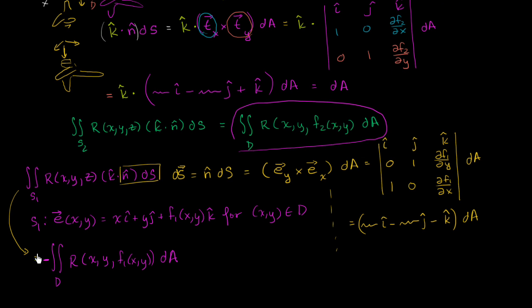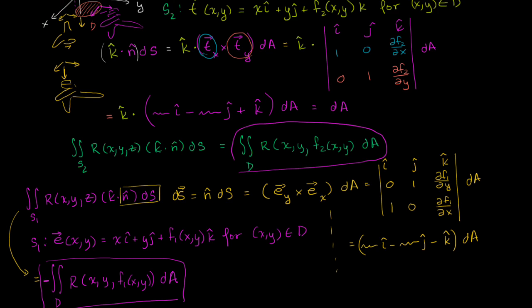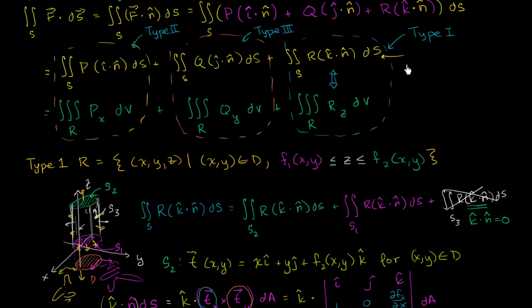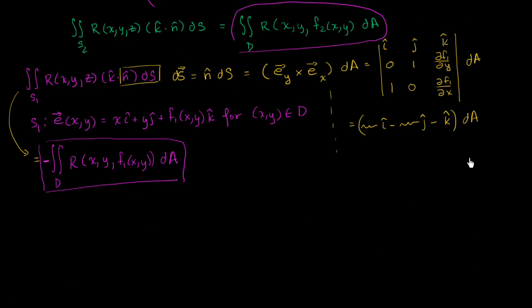Let me just rewrite it so that we can make everything clear. The surface integral over our entire surface of r times k dot n dS is equal to the double integral in the domain D of this thing minus this thing dA. So I'll write r of x, y, and f2 of x, y.